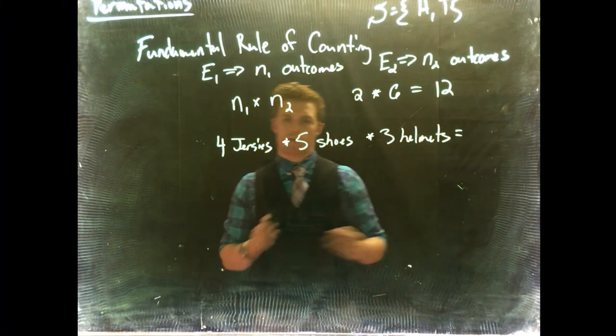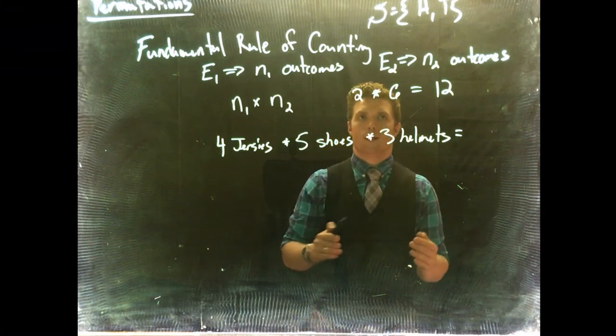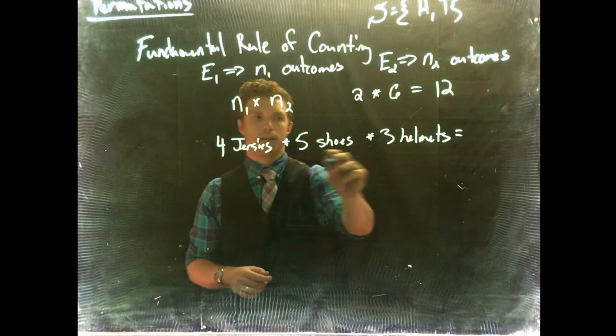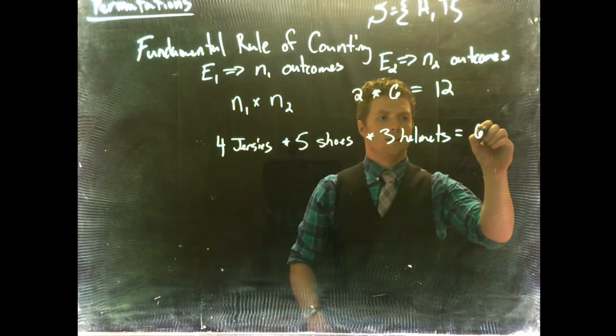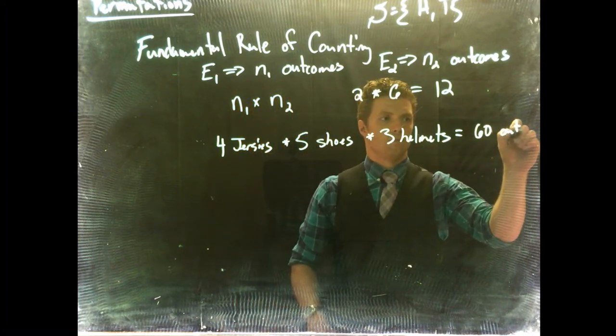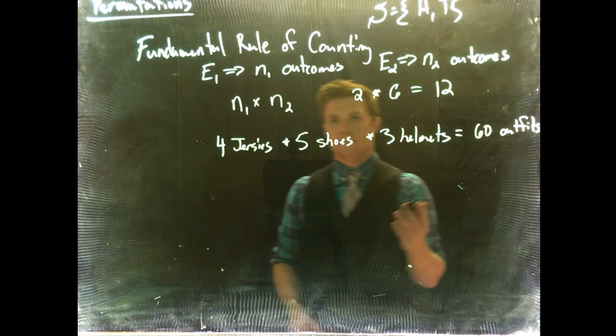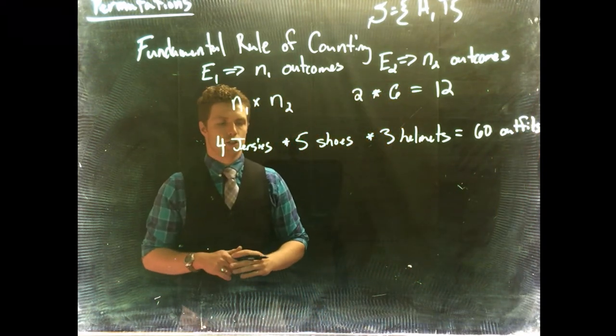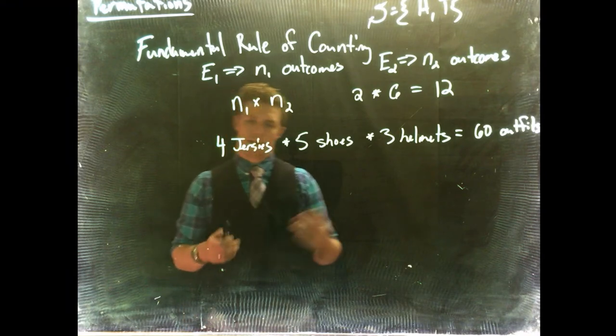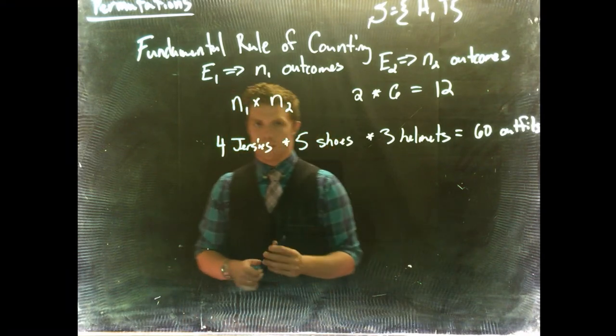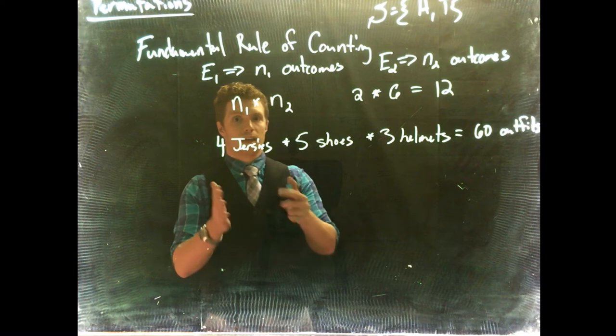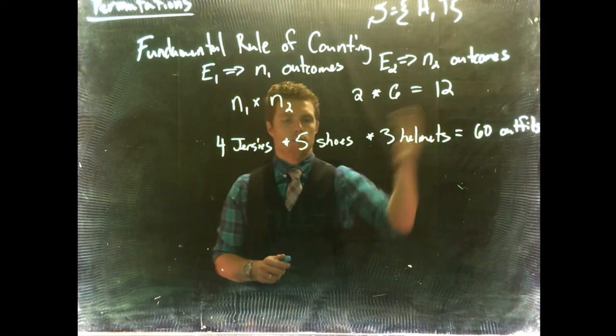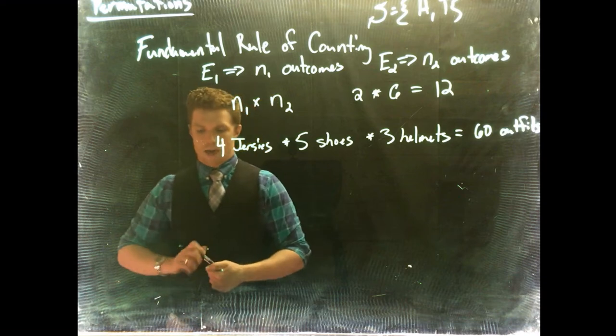So if you had four different jerseys, five different types of shoes, and three different helmets, how many total outcomes would it be? Well, we'd do four times five, which would give us 20 times three, which would give us 60 outfits. I think they actually did this with the Oregon Ducks before, and it was a ridiculous number of Jersey and shoe and helmet and pant combinations that they could possibly have. But instead of like actually going through and labeling all of these, I was just able to quickly give us how many possible outfits we have.